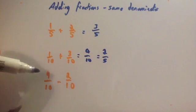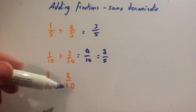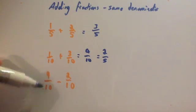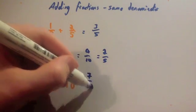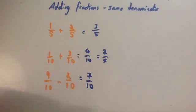Next one, let's do subtraction. Nine tenths take away two tenths. If I have nine tenths and I take away two tenths, I'd be left with seven tenths. And that can't be simplified, so that's your answer.